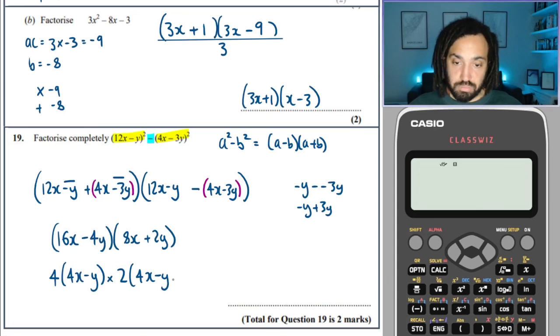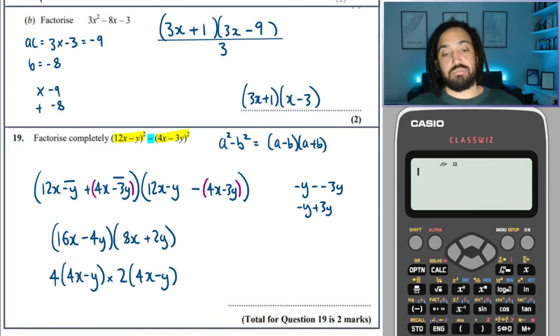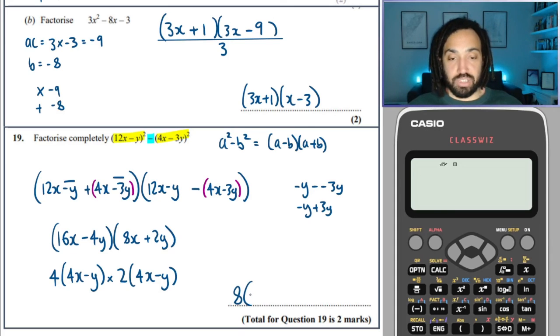Okay, great. It does say factorize completely. And I can see that inside these brackets, there are actually factors. So this one could be divided by 4. So I can take a 4 out of this one. And this one, I can take a 2 out of.